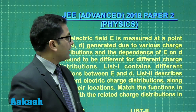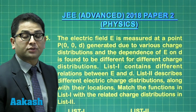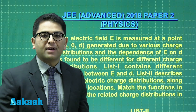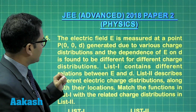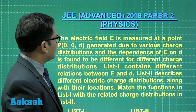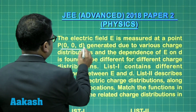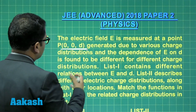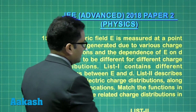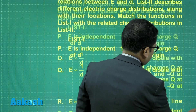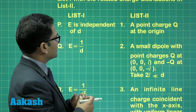The next segment includes matrix match questions. Question number 15 is about the electric field measured at point (0, 0, D) — that means along the Z-axis — due to various charge distributions. We need to find the dependence of E on D. It's a straightforward question with a minor modification.